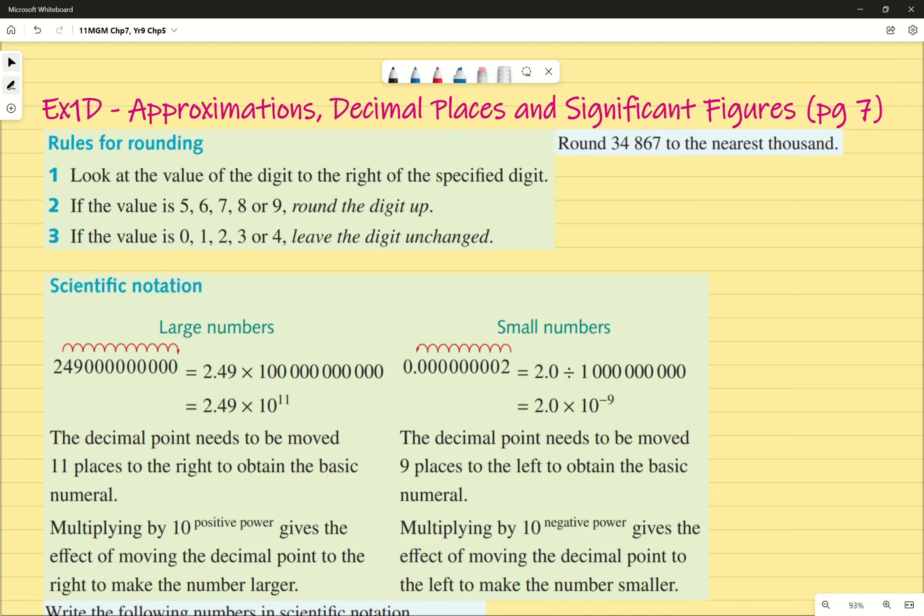This is our introduction to approximations, decimal places, and significant figures on page 7 of our textbook. Generally speaking, rounding and rounding decimal places we're pretty good at in terms of approximation. What do I mean by approximation? Why is rounding a value approximating? Or when would you ever want to round a value?